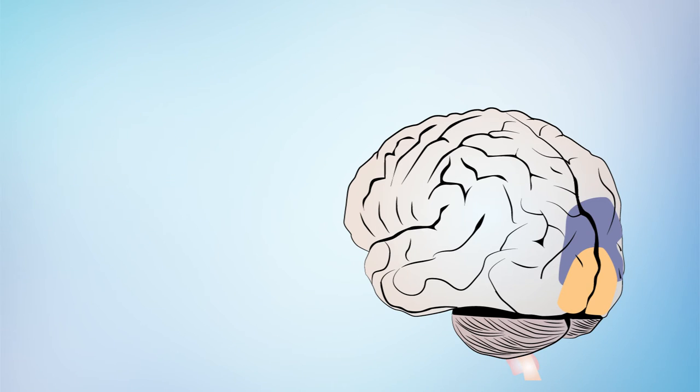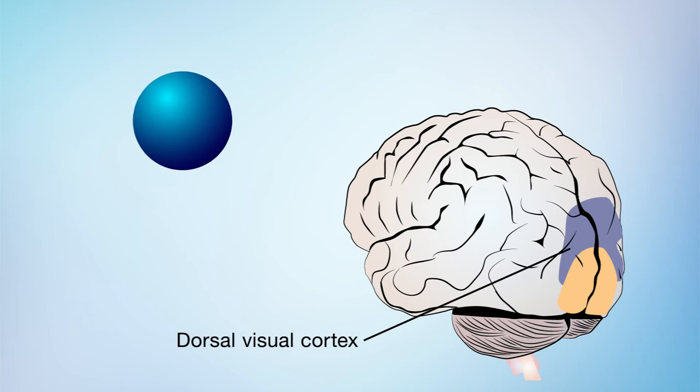Subsequent brain imaging studies have found that the dorsal visual cortex is particularly attuned to disparity and discriminating an object's shape and texture.